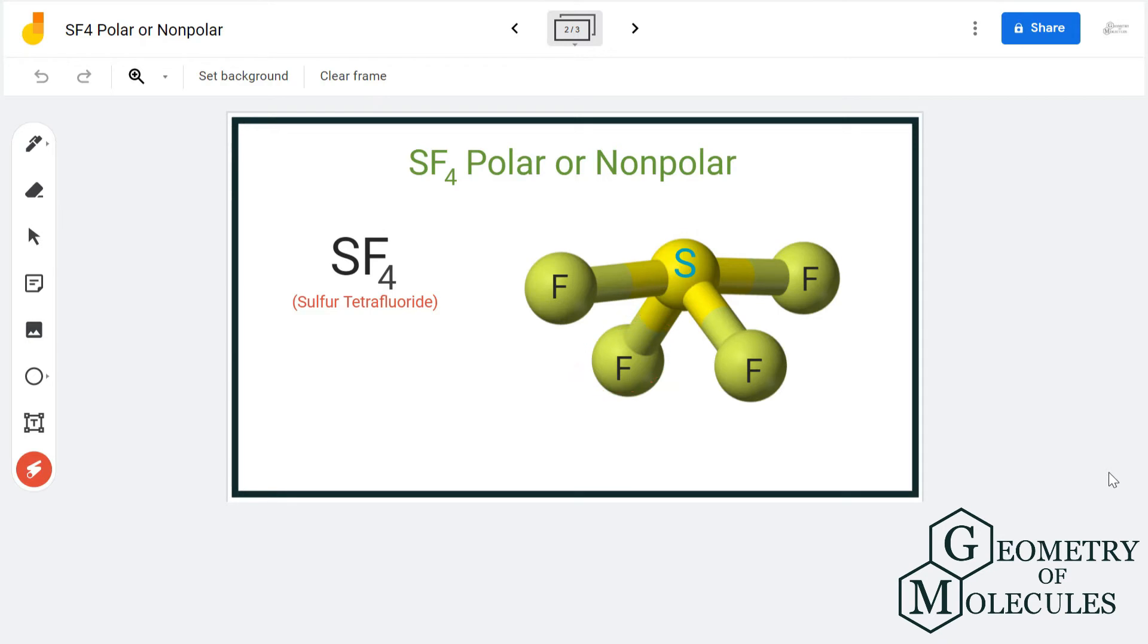As mentioned, fluorine is more electronegative than sulfur atom, so there will be a dipole moment between sulfur and fluorine. But the directions of the dipole moments of both these atoms, for this atom and for this atom, they'll cancel out each other's dipole moment because they are in opposite directions.